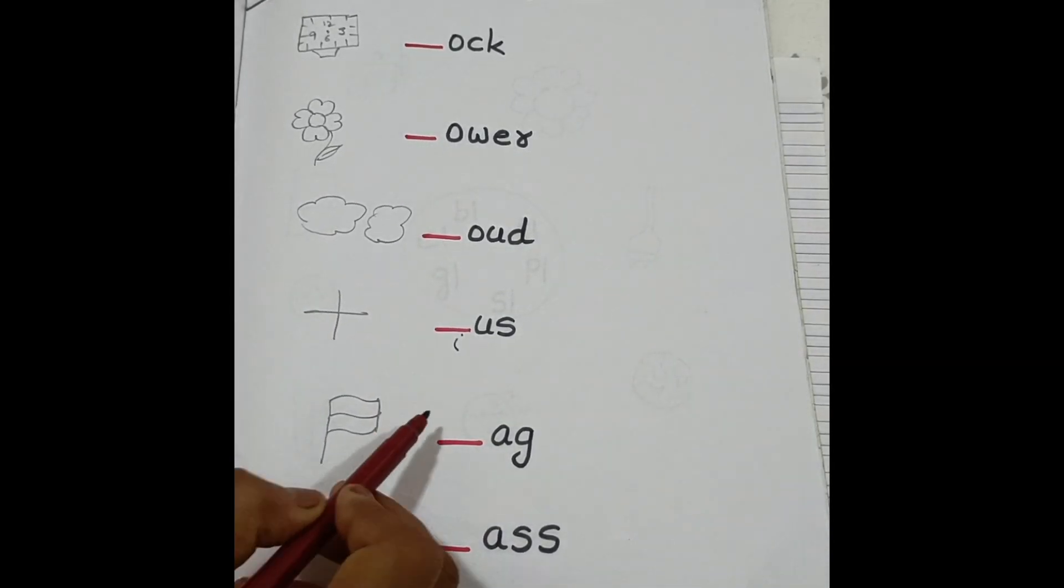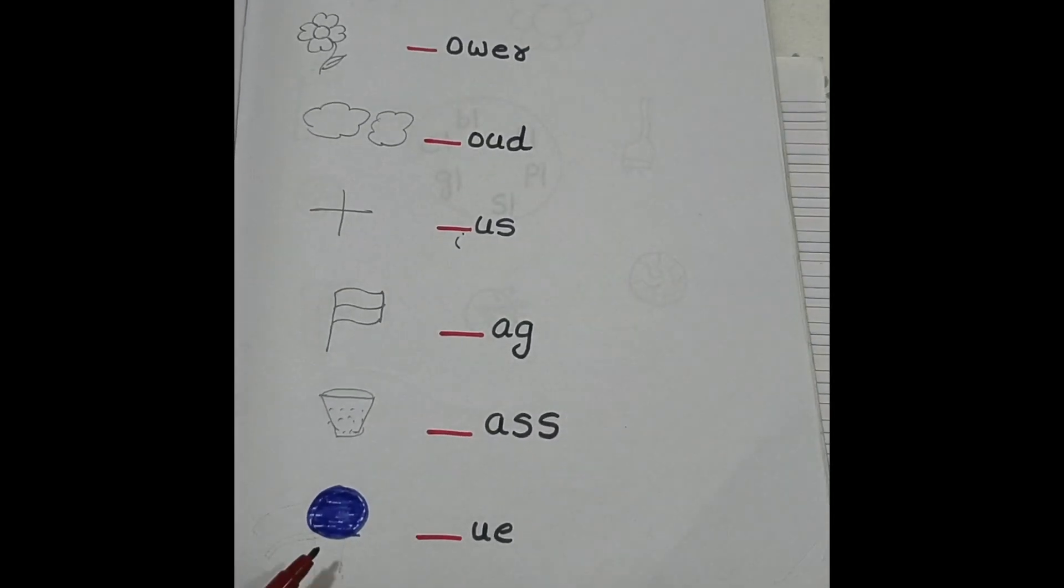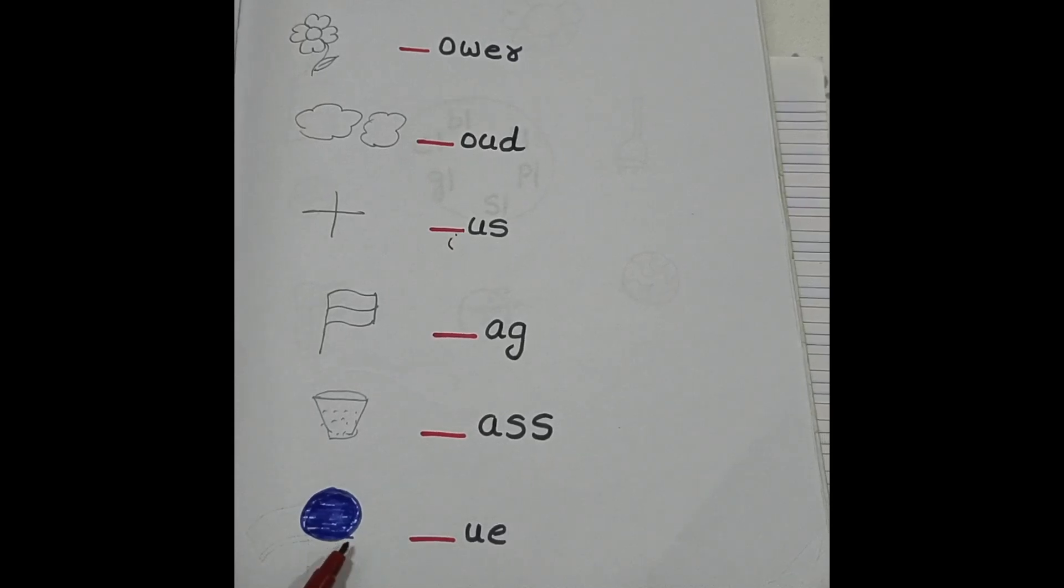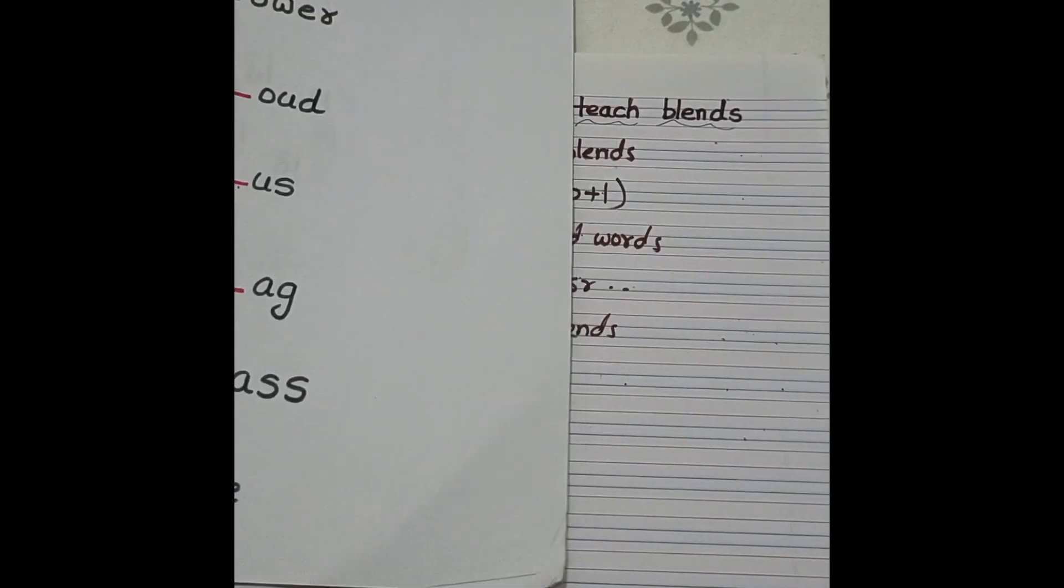Fl, fl, flag. They need to write fl. Gl, gl, glass. Gl. And this is blue. Bl, bl, blue. So this is the second worksheet.